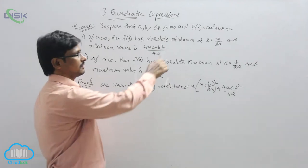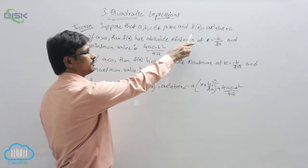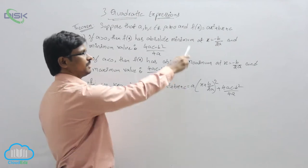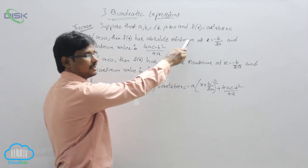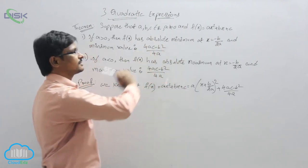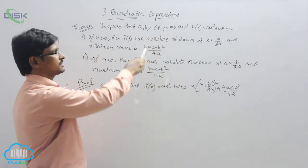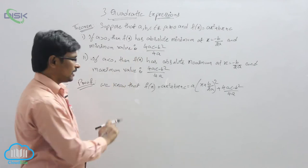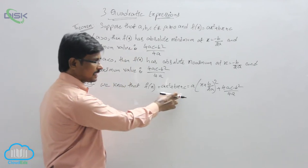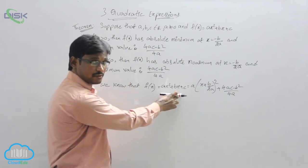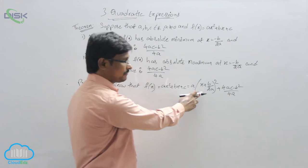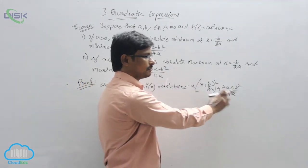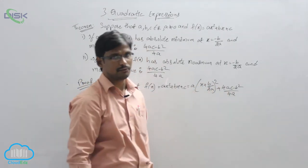We will discuss what is the maximum and minimum value of the quadratic expression ax² + bx + c, where a is not equal to 0 and a, b, c belong to real numbers. We know that f(x) can be written as a(x + b/2a)² + (4ac - b²)/4a.